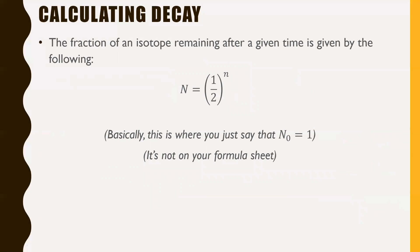Now the fraction of an isotope remaining after a given time is given by this: n equals one-half to the power of lowercase n. Basically, this is just where you said your N₀ was one, or 100%. Your initial amount was 100%, so the one would be right there, and your final amount is that as a decimal. It's just the fraction of how much remaining is left over. This is not on your formula sheet. We might use it every now and then. But if you're saying how much is left over, what percentage is left over, just set your initial amount N₀ to one or 100%. That's how that's done.